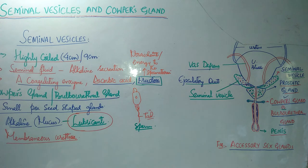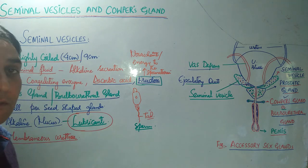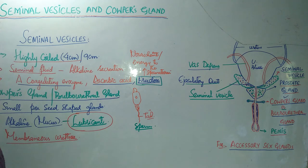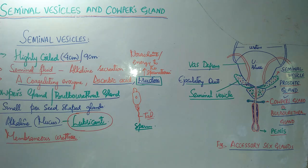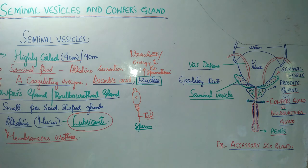This alkaline mucus also serves to neutralize the acidic environment found in the female reproductive tract. The female reproductive tract has a highly acidic environment that needs to be neutralized during the transportation of spermatozoa through the female genital tract, and it is neutralized by these alkaline secretions. Hope you understood what seminal vesicles and Cowper's glands are, their secretions, and how those secretions work. If you liked the video, please subscribe to the channel and share the content.